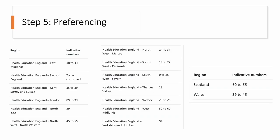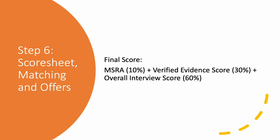The next step is preferencing. You will be asked to list your choice of training program and the region in which you want to train. Certain core surgical training programs are general whereas there are some themed training programs as well — for example, if you want to pursue urology training, you can choose a urology themed core surgical training program. The last step is getting matched to the program. Your final score is a sum of your MSRA score, your verified evidence score, and your overall interview score. Depending on the score, you would be given a national training number and offers would be made based on the applicant's ranking and preferences.